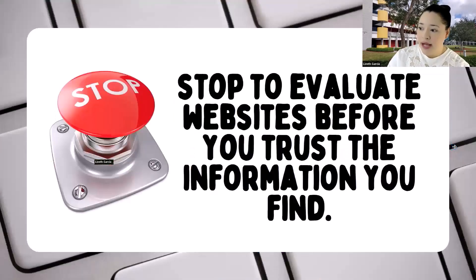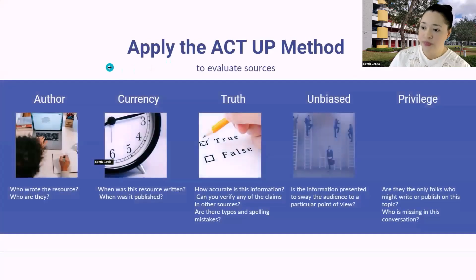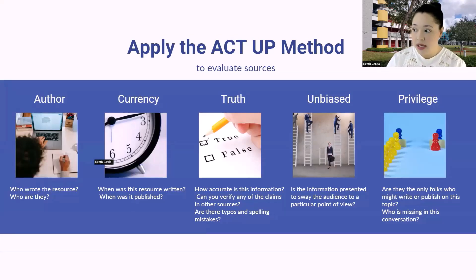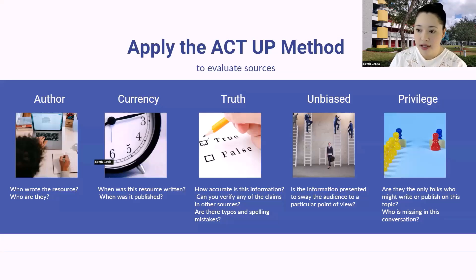You have to stop to evaluate sources before you trust the information you find. You have to have a little skepticism — consider your source, the date, and whether other sources are also reporting the same. Author: who wrote the source? Currency: when was it written and published? Truth: how accurate is it, can you verify claims, are there typos? Unbiased: is the information presented to sway the audience or sell a product? Privilege: are they the only folks writing on this topic, and who is missing from the conversation?